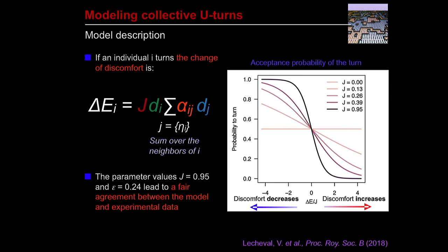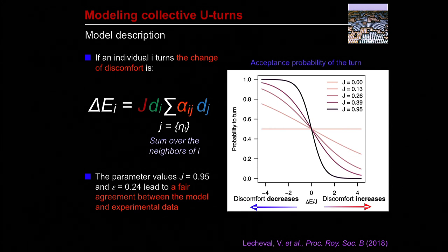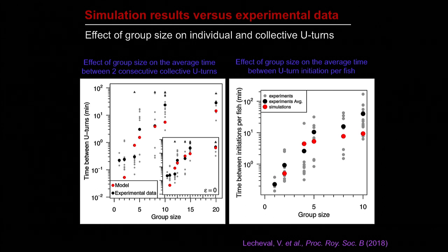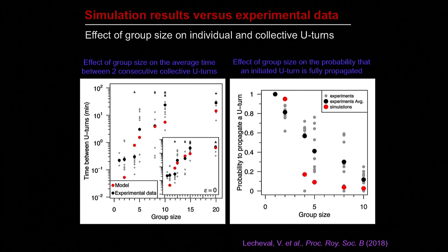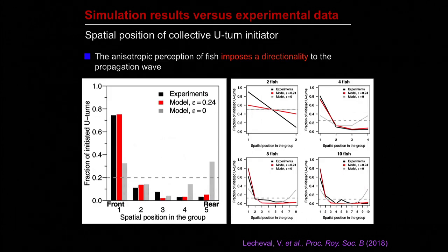We used this model to explore the impact of J and epsilon on the collective dynamics, and found a pair of values for these parameters that gives fair agreement between simulation results and experimental data for all group sizes. In particular, the model quantitatively reproduces the effect of group size on the dynamics of collective U-turns — the number of collective U-turns decreases as group size increases. The model also reproduced the tendency for individuals to initiate U-turns, and the simulation reproduced the sequential propagation of information both in space and time.